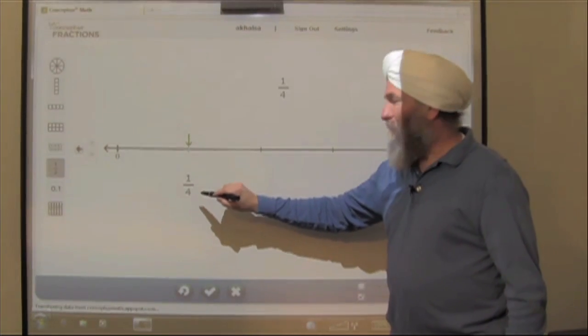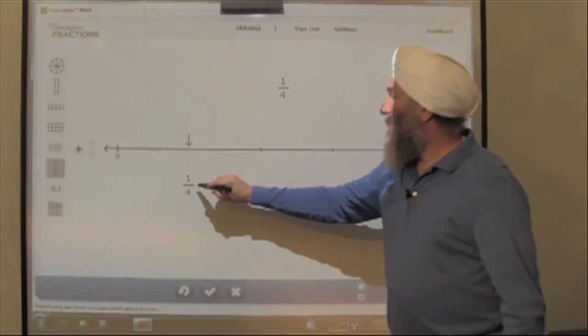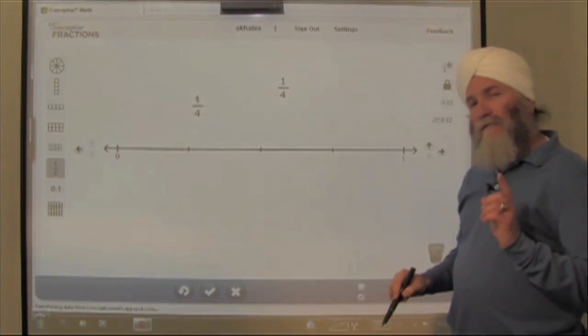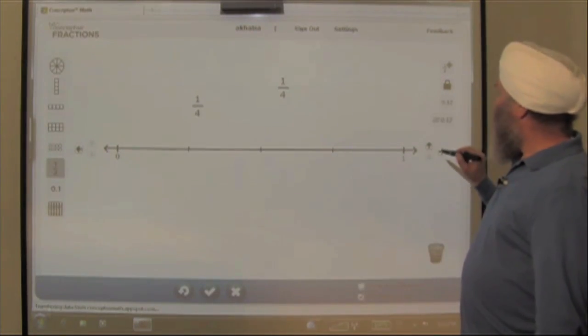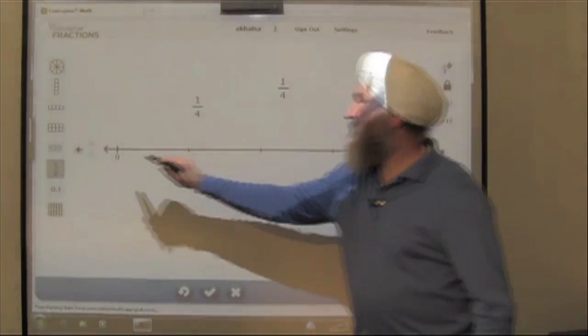There's something interesting about 1/4, and that is that it can also be represented as a decimal. Here's what I'm going to do: I'm going to change the partitions on the number line.